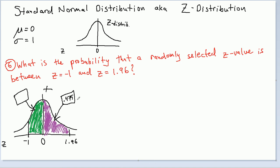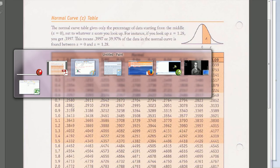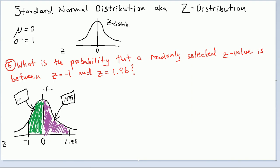Now let's go look up z equals negative 1. We know we don't have negative z values on the table, but we know that whatever happens on the right happens on the left of the mean. So we look up z equals 1, and we get 34.13% in that region — so 0.3413. And if we have the two regions, we can simply add them. You want this total area.